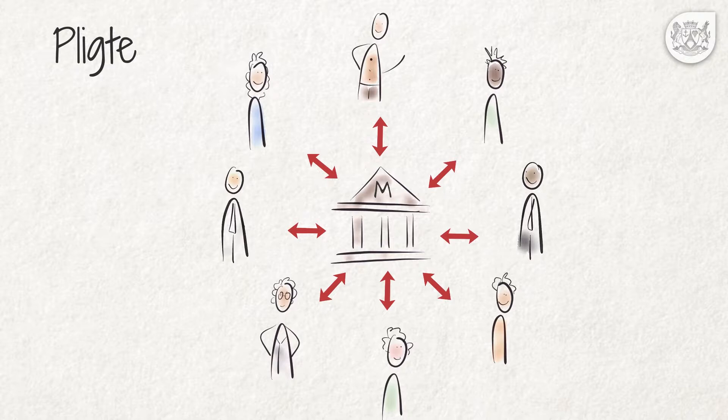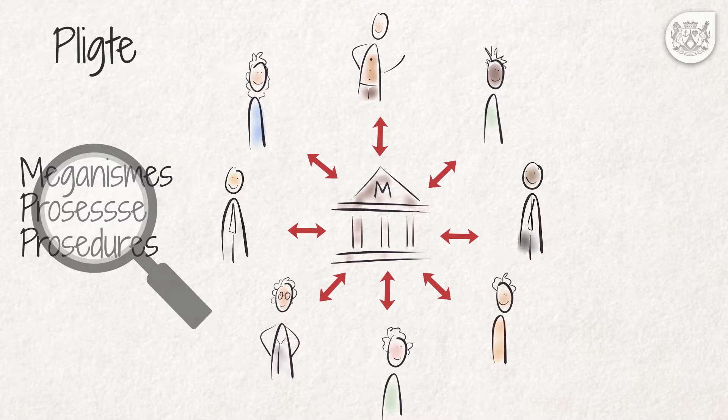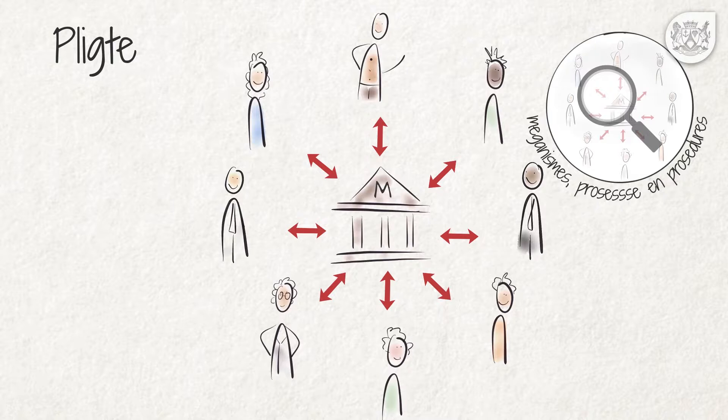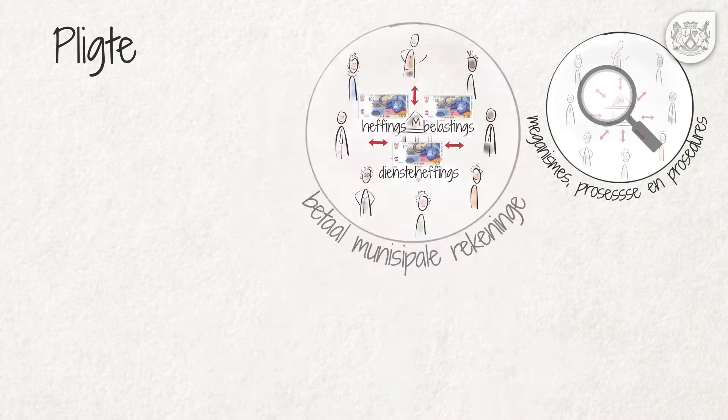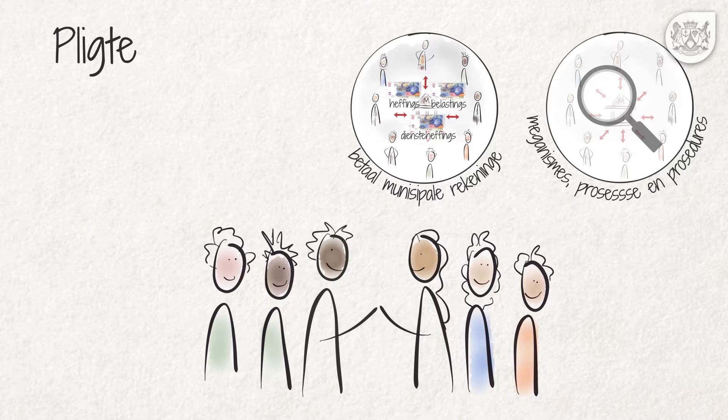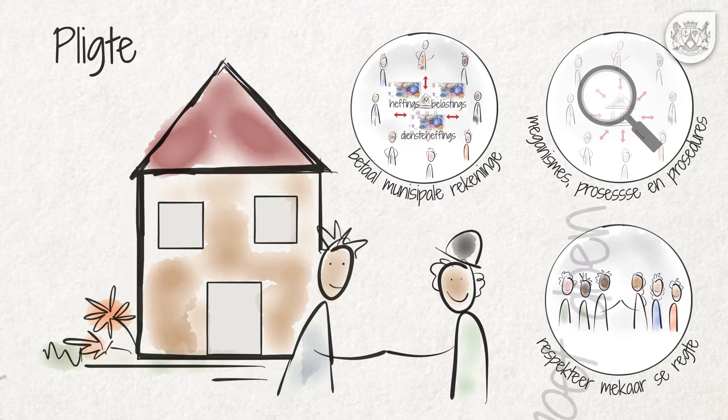Ons het egter die volgende verpligtinge: om, wanneer ons ons regte uitoefen, die meganismes, prosesse en prosedures van die munisipaliteit na te kom, om ons munisipale rekeninge met inbegrip van diensteheffings, belastings en heffings betyds te betaal, om die regte van ander lede van die gemeenskap te respekteer, om munisipale amptenare op ons eiendomme toe te laat wanneer hulle hul werk moet doen, en om toepaslike munisipale verordeninge na te kom.